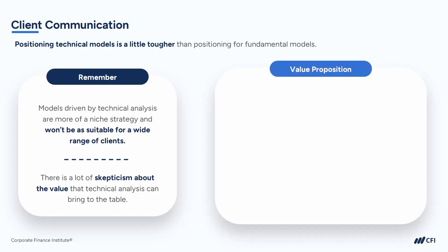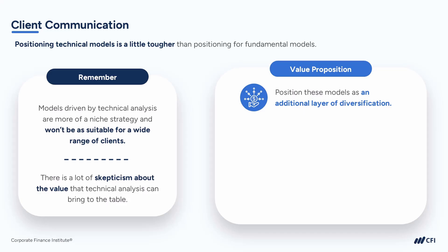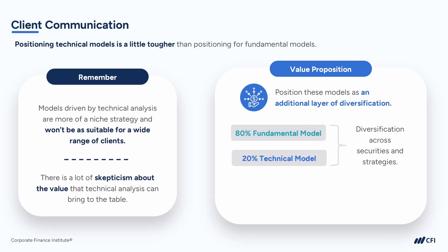Instead, you can position these models as an additional layer of diversification that's available, which can benefit your clients during choppy markets. For example, of a client's equity allocation, you could recommend allocating 80% of their capital to a fundamental model and 20% to a technical model — giving you diversification across different securities as well as strategies. This is something you can highlight to your clients, which will differentiate your style of management from the competition.